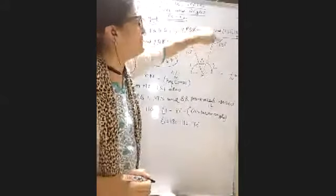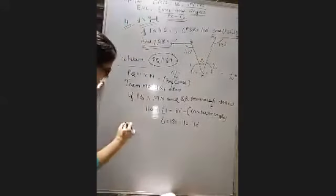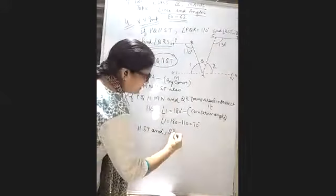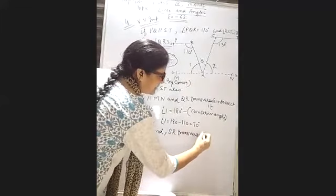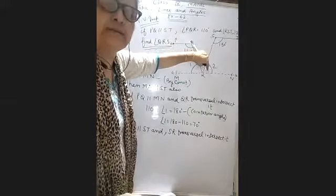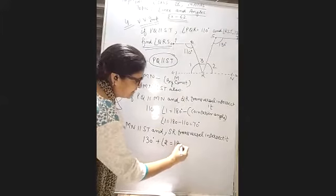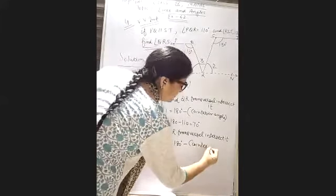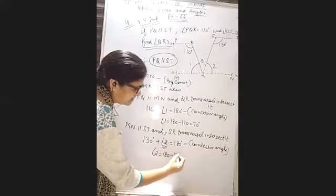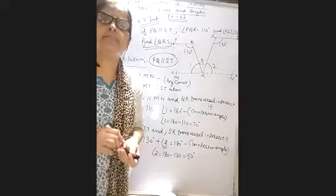Next angle: MN is also parallel to ST. So if MN parallel to ST and RS is the transversal intersecting, then angles 130 and angle 2 are formed. These are also co-interior angles, so 130 plus angle 2 equals 180 degrees. Therefore angle 2 equals 180 minus 130, which is 50 degrees.